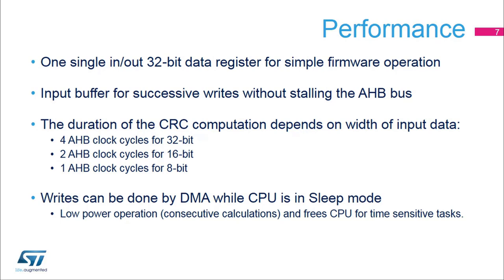The CRC data register can be accessed by word, right-aligned half-word, and right-aligned byte. The duration of the computation depends on the data width: 4 AHB clock cycles for 32-bit, 2 AHB clock cycles for 16-bit, and 1 AHB clock cycle for 8-bit.